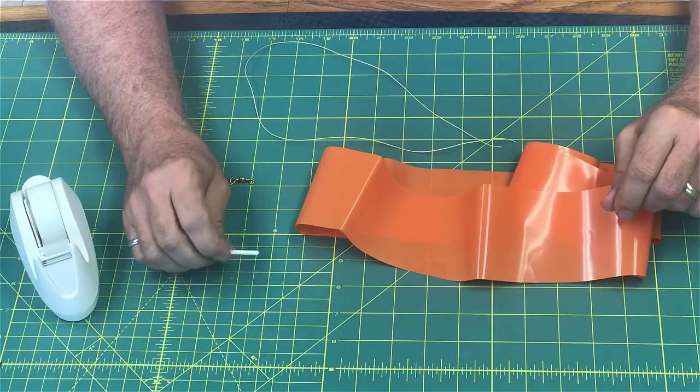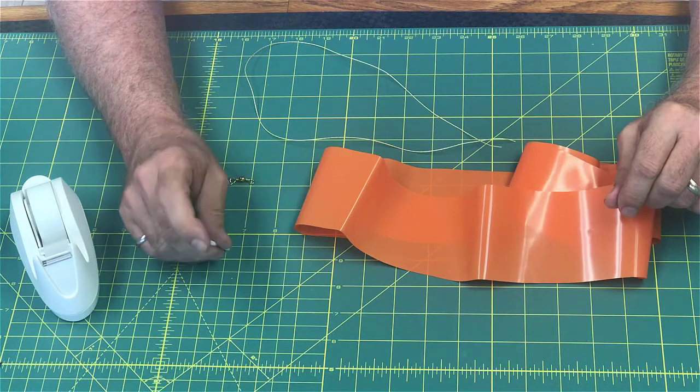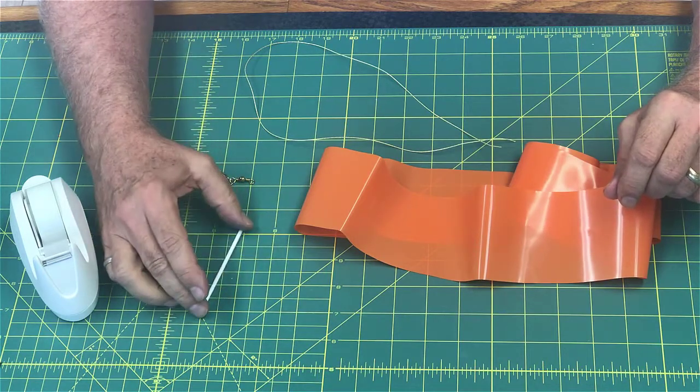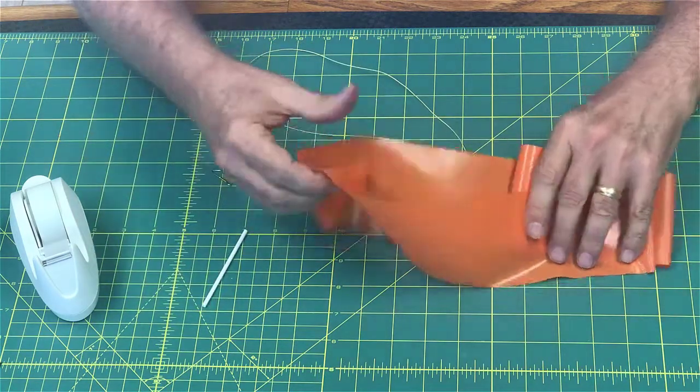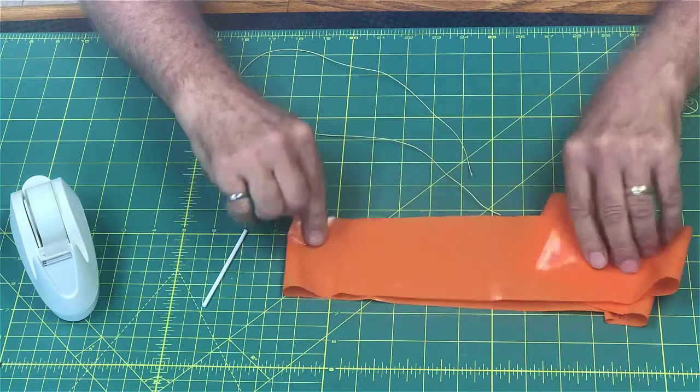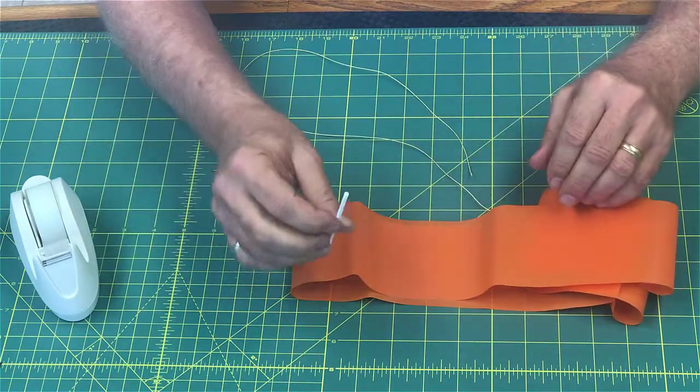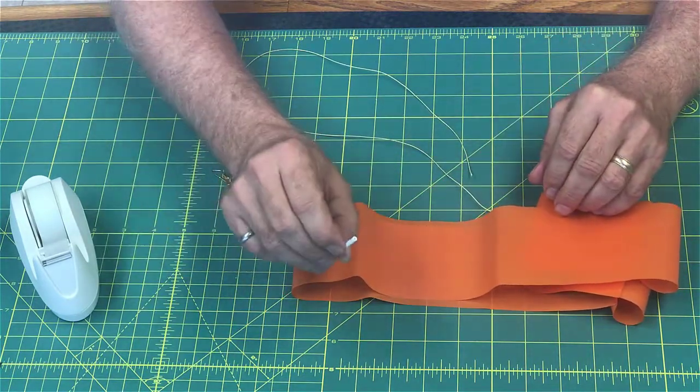Now I'm going to show you how to make your streamer, which is one of the recovery devices we might be using for your rocket. To make your streamer, you're going to need your streamer material, which is just this plastic strip, and you're going to need this little teeny straw, which looks sort of like a coffee stirring stick.